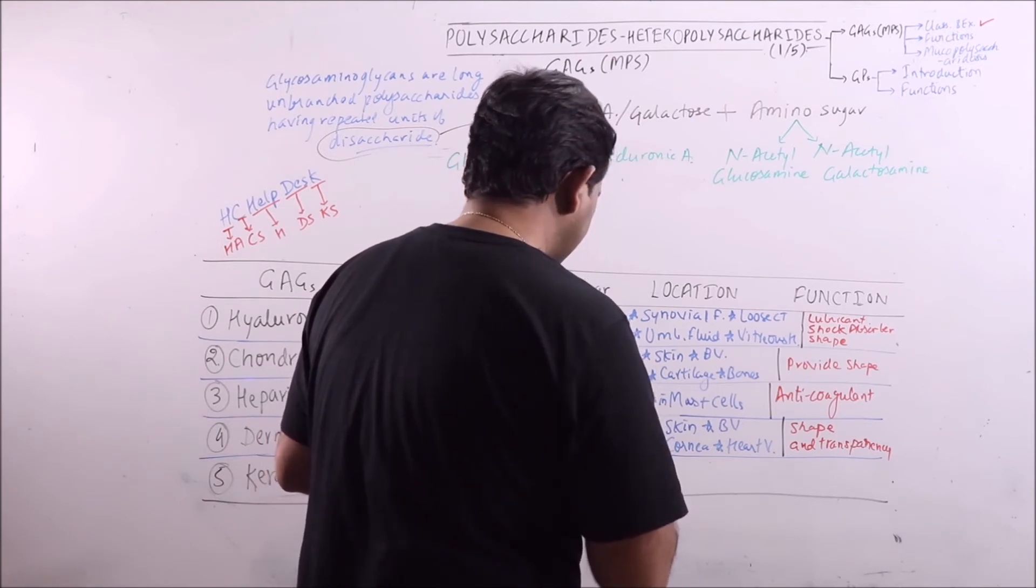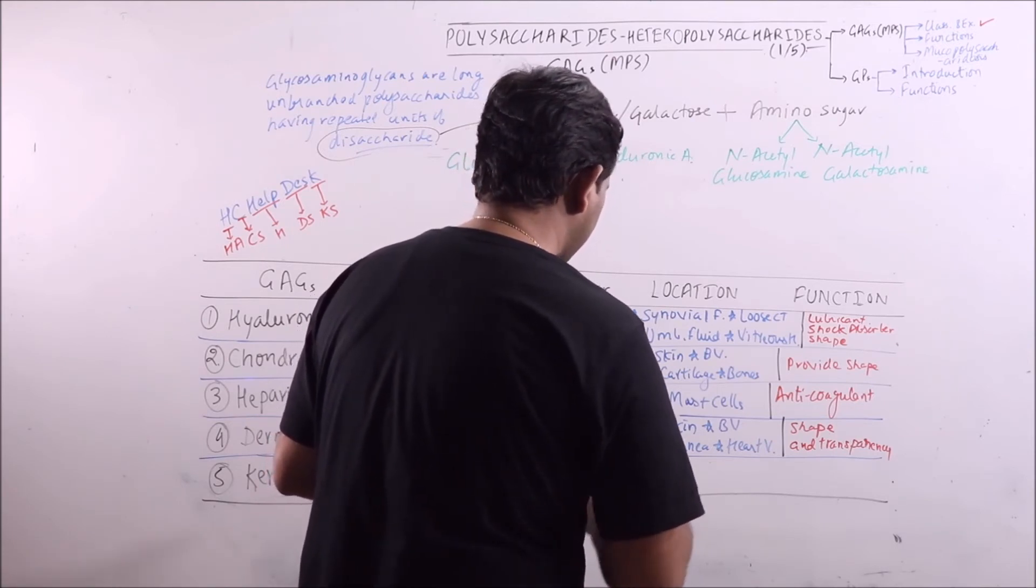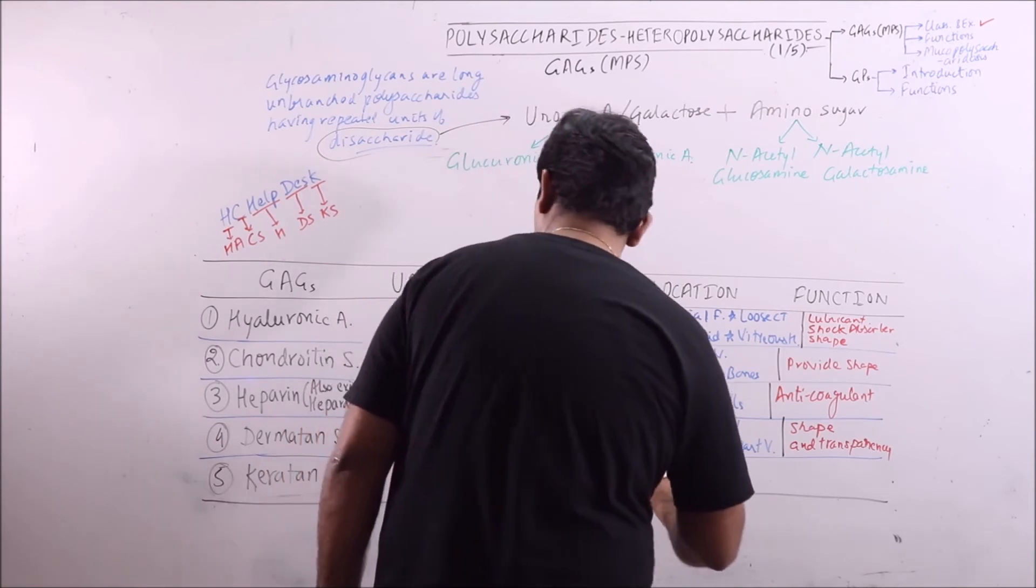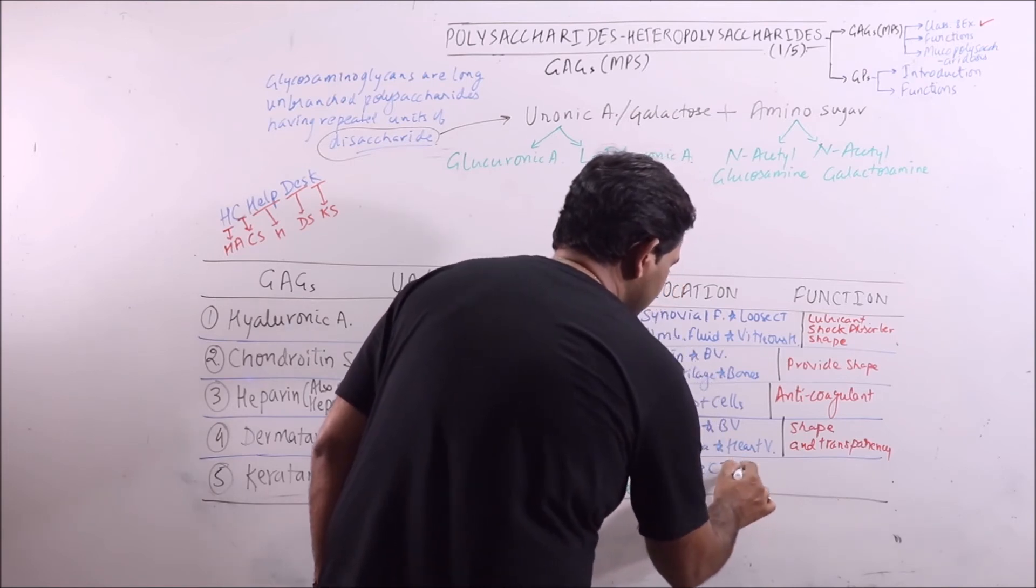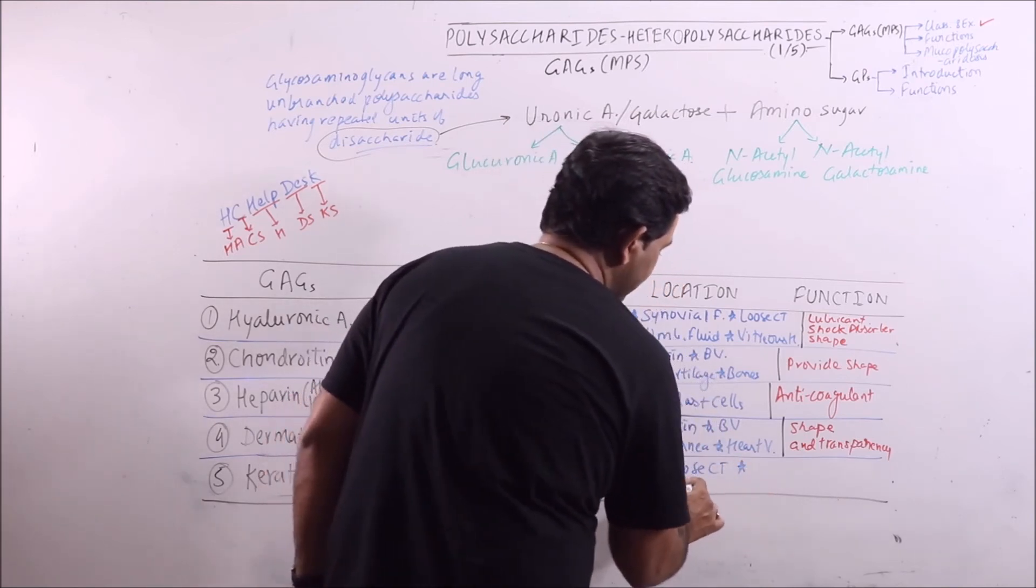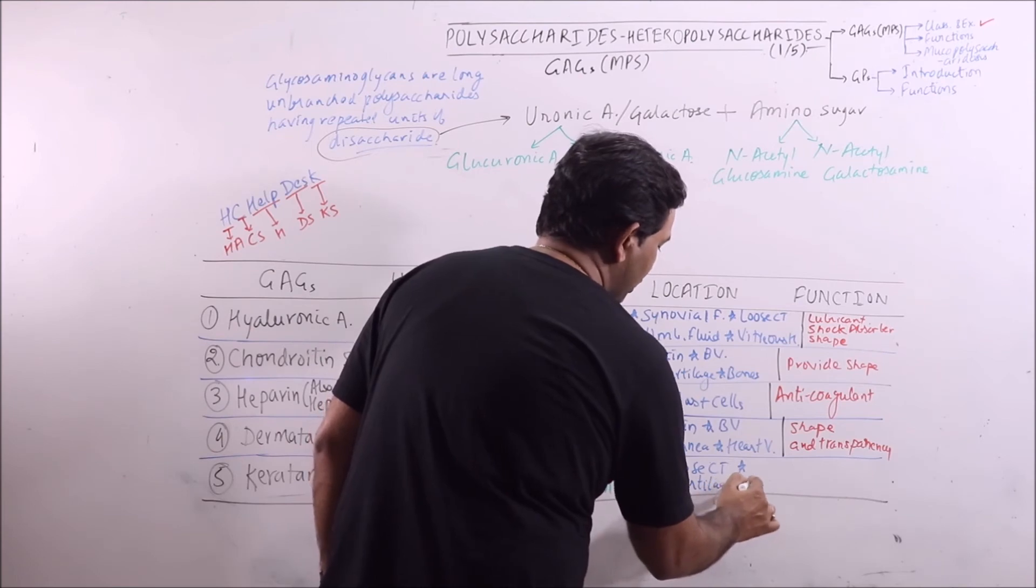The last one is keratin sulfate. It is found in loose connective tissue, cartilage, and cornea.